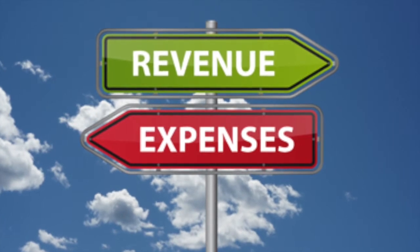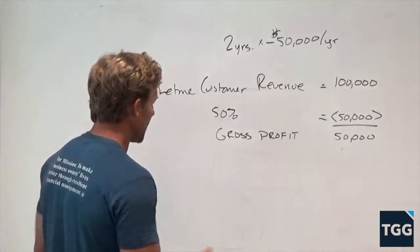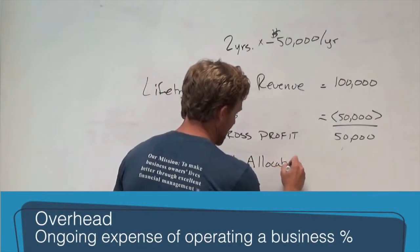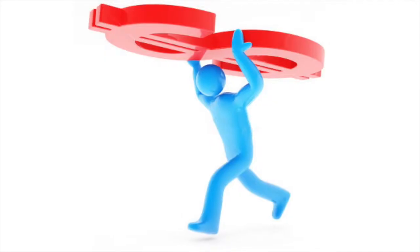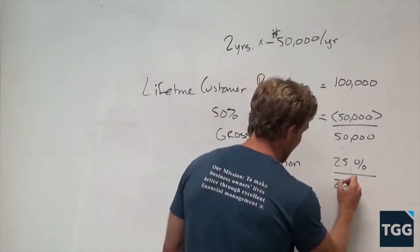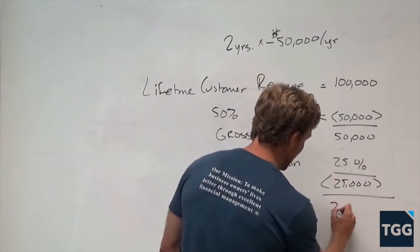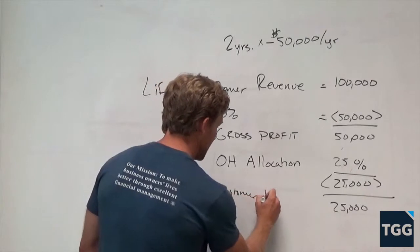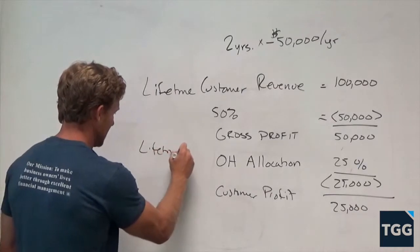Then you have to say, well, we still have overhead and other expenses associated with this specific customer. We then have to account for lifetime overhead allocation. You do this typically as a percentage — in this case we're going to say it's 25%, which equates to $25,000. We subtract that from our $50,000 to be left with $25,000 of lifetime customer profit. These are all lifetime figures.